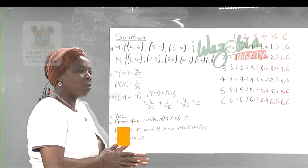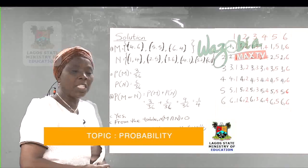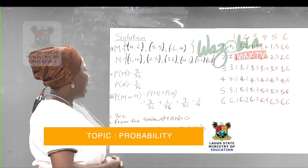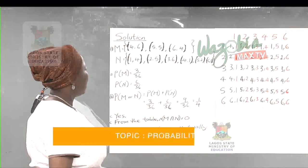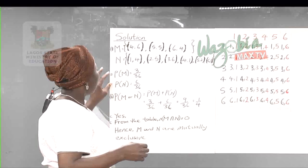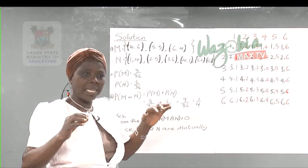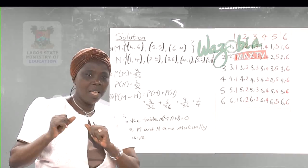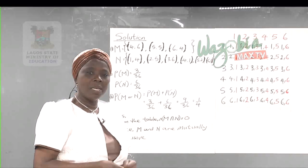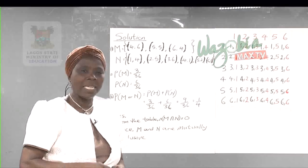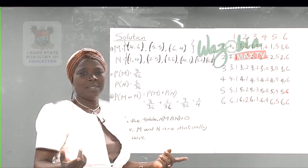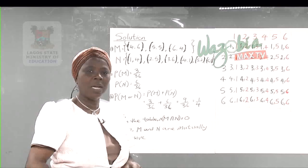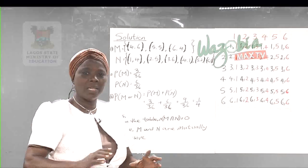The question asks us to find the probability of M or N. M and N are mutually exclusive events because if the sum is 10, the difference cannot be 3. So the occurrence of one prevents the occurrence of the other.